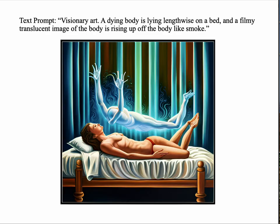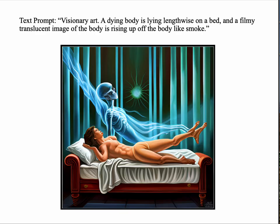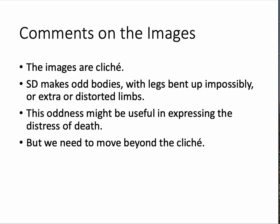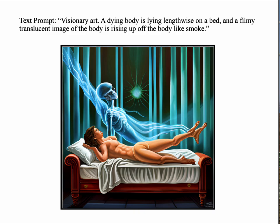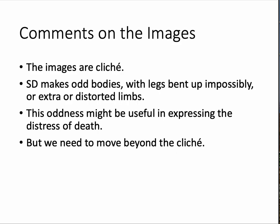This image is interesting in a number of ways. Here's another image that's very similar — the text prompt is the same, but I did a little iteration. We have this other blue thing rising up off a body. And yet another image with the same prompt: a blue smoky thing rising up off the body. So what do we have to say about these images? First of all, they're all cliché. Another thing you probably noticed is how weird some parts of the body are — the face is distorted, the legs are distorted. This oddness could be a bug, but it could also be a feature — useful in expressing the distress or extremity or oddness of death itself.